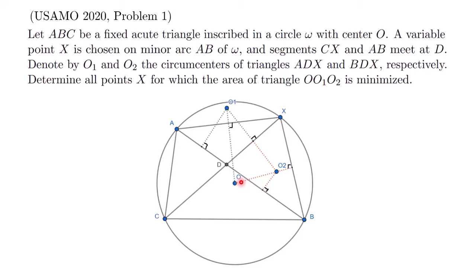So the problem is to determine all points X for which the area of triangle O, O1, O2 is minimized. Now this is quite an interesting problem because it's not often the case that we are asked to minimize the area of a triangle for a geometry problem. Despite the unusual problem statement, I think as with most geometry problems, we would like to start with some amount of angle chasing.